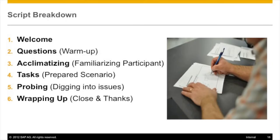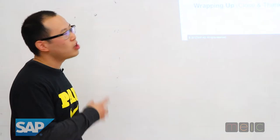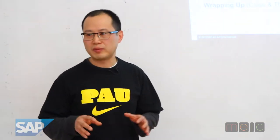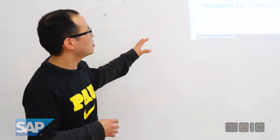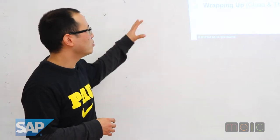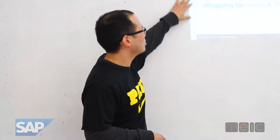The script breakdown really comes down to six particular parts. The first part is a welcome, and then we'll talk about a call question — but really it's a warm-up. We want to establish some type of rapport. Then we acclimatize the user a little bit, and then we'll do the test. Number four is really where the meat of the usability testing comes in, and then afterwards we'll do some probing and wrapping up.